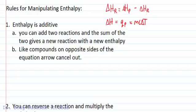Enthalpy is an additive property. You can add two reactions and the sum of the two gives you a new reaction with new enthalpy. This is very close to Hess's law. Another property is that like compounds on opposite sides of an equation arrow cancel out.